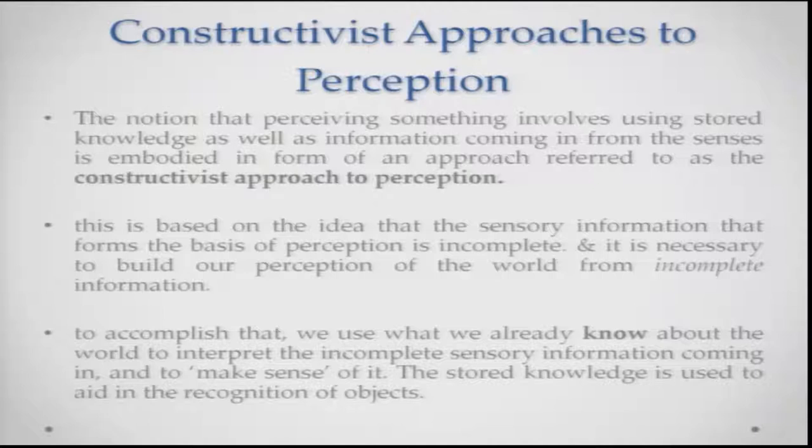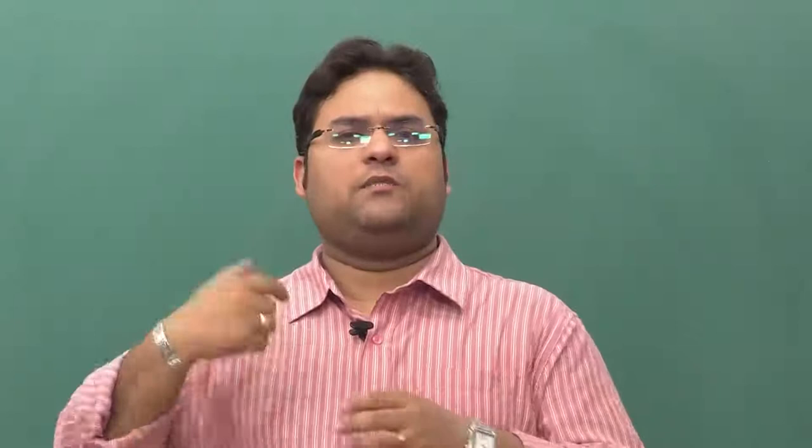For example, when looking at a figure where most objects are occluded by each other, I am making up that there is a continuation. Say for example, you are looking at a wall with a lot of photo frames on it. You have this assumption that behind the photo frame the wall is still there — it is continuous. So you are filling in that information which is incomplete — your ambient optic array is not carrying the information of the wall behind the picture. You use this knowledge.